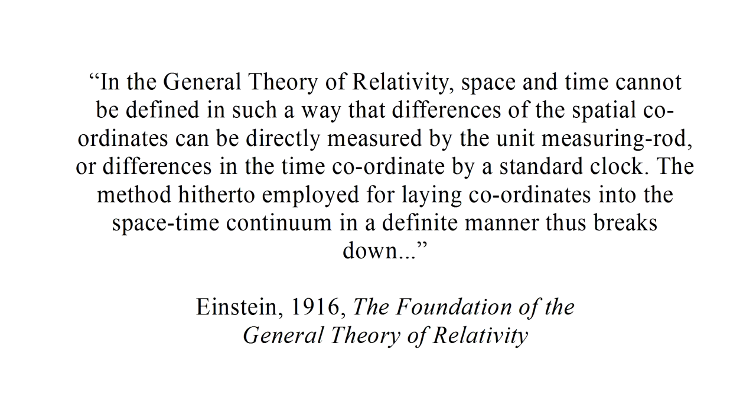In his 1916 paper, Einstein describes this problem as follows. In the general theory of relativity, space and time cannot be defined in such a way that differences of the spatial coordinates can be directly measured by the unit measuring rod, or differences in the time coordinate by a standard clock. The method hitherto employed for laying coordinates into the space-time continuum in a definite manner thus breaks down. Now, of course, the classical prior geometry physics of Galileo and Newton worked very well in our day-to-day experience. So, we expect that this no prior geometry weirdness will only become apparent in extreme limits where classical physics breaks down and general relativity begins to reign supreme.